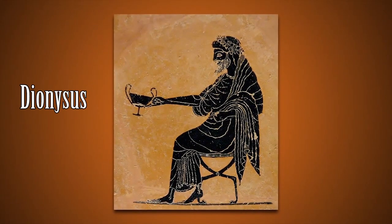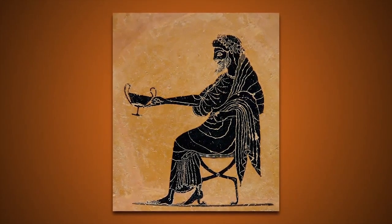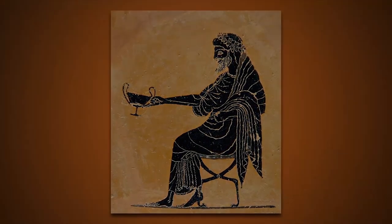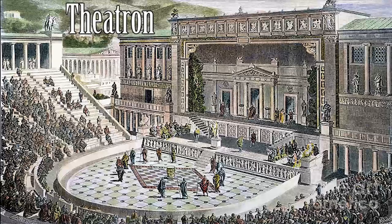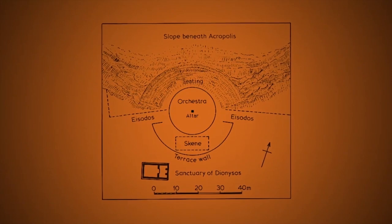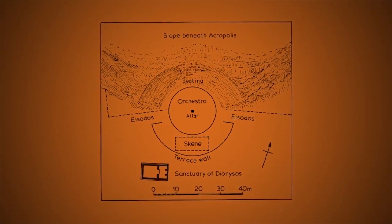Attending the festival and listening to the plays was regarded as an act of worship. A Greek theatre building, or theatron, was open to the sky. Greek summers being rainless, it consisted of three parts: the orchestra, the skene, and the audience.